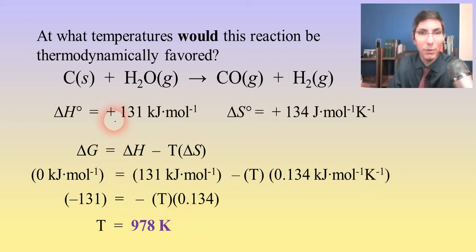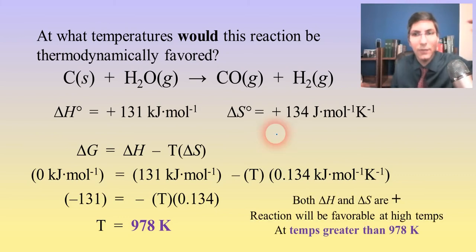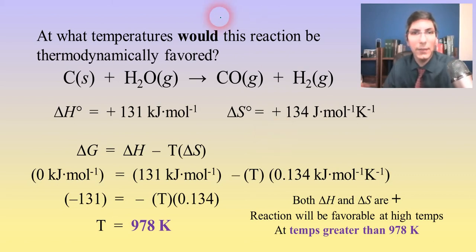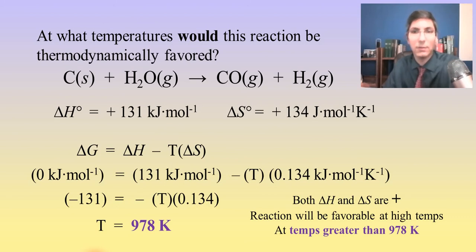That's a pretty high temperature. Since both delta H and delta S are positive, it's a TFP at high temperatures, meaning you need to get this reaction above 978 kelvins to make it work. This is a really useful calculation in industry — if you're a chemical engineer or chemist trying to run this reaction in a factory, you need to know what temperature that reaction chamber has to be. If you get it too low, the reaction for all practical purposes is not going to happen.